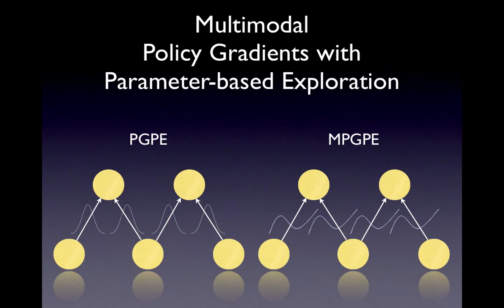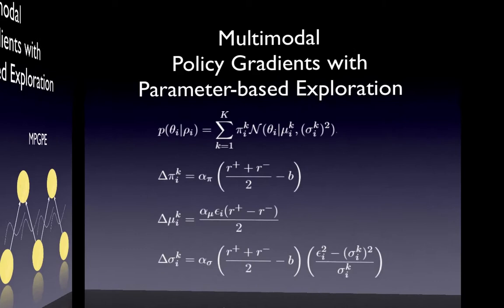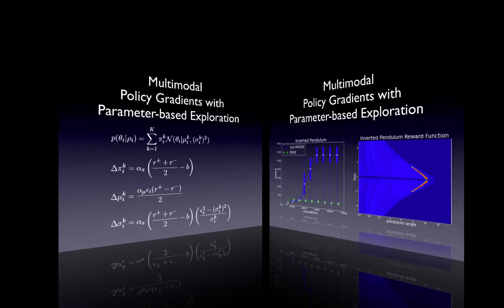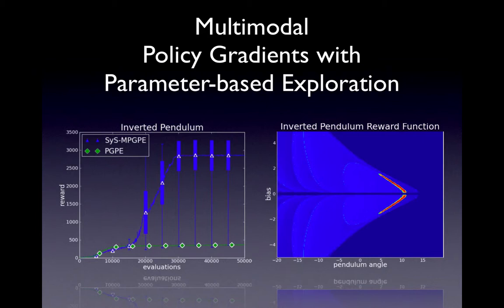Now one has not a single Gaussian per parameter anymore but a mixture of Gaussians, which also changes the math. The equations here are already from the simplified version of MultiPGPE. The idea of the simplification is as follows: drawing a sample from a mixture is equivalent to deciding first on a Gaussian, proportionally likely to the weights pi, and then drawing a sample from that Gaussian distribution. In the simplification we define that only the Gaussian that actually produced the sample will be updated. This yields update rules very similar to standard PGPE, with the only difference that the variables now have an additional index k that states which Gaussian we are talking about. We also update the mixture weights to make Gaussians that produce parameter samples with above-baseline average reward more likely to be selected in the future.